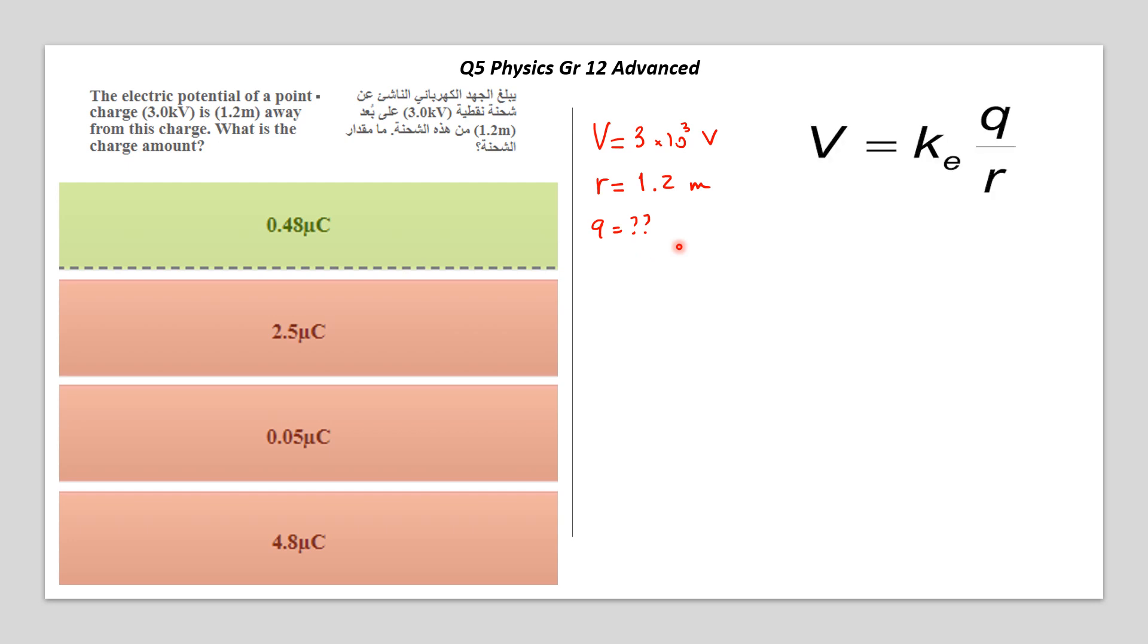The electric potential is equal to the Coulomb's constant K multiplied by the charge Q divided by r.